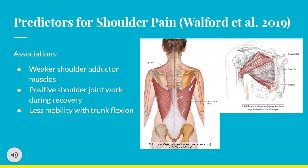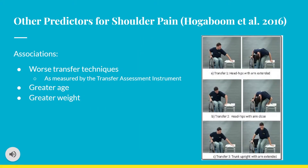If the patient presents with any of these associations, they are more likely to develop shoulder pain over time. Other predictors were found by Haga Boone et al. in 2016, who investigated transfer techniques, age, and weight. They found that worse transfer techniques, as measured by the Transfer Assessment Instrument, were associated with shoulder pain development — the lower the TAI score, the worse the technique and the greater the risk. Greater age and higher weight also attributed to shoulder pathology including subacromial impingement syndrome.